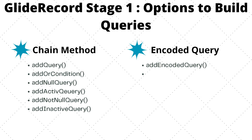For building queries in stage one, we have two options. The first is the chain method, where we chain a number of methods together such as addQuery, orCondition, nullQuery, notNullQuery, and activeQuery. The second option is encoded queries, which uses the addEncodedQuery method.